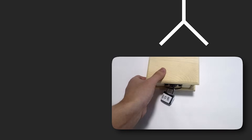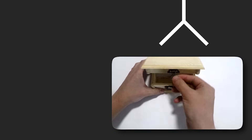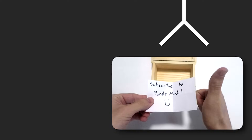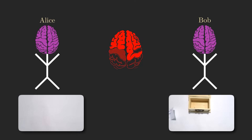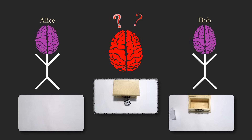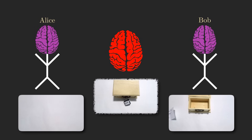Bob is, of course, the only one who has the private key to his public padlock. So once he receives the box with Alice's secret message, he can open the lock and read it. But an eavesdropper who intercepts that box with Alice's secret message cannot open it because they don't have Bob's private key. Now Alice can send Bob a secret encrypted message that only Bob can read using just public communication.